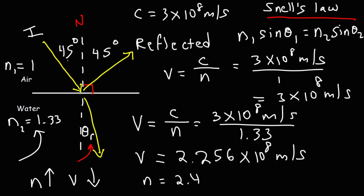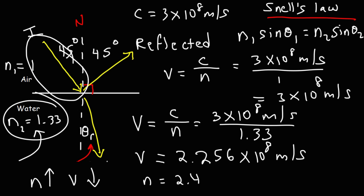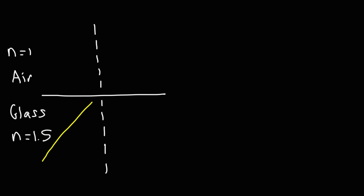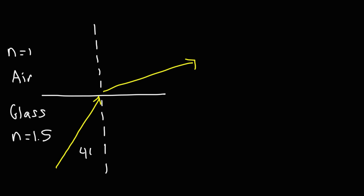Now let's consider the situation where light travels from a material with a high index of refraction to one with a low index. Let's say we have glass on the bottom and air on top. The index of refraction for glass is 1.5. This is the incident ray, and this time the refracted ray is going to move away from the normal line. I'll choose an angle of incidence of 40 degrees.